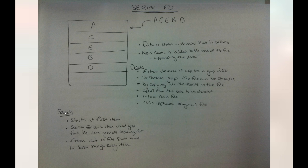If we want to search a serial file, we have to search from the first item. We start at the first item and keep searching until we find the item we are looking for. Say we want to find B — we go to the first item: is A equal to B? No. Is C equal to B? No. Is E equal to B? No. Is B equal to B? Yes — so then we find our item.